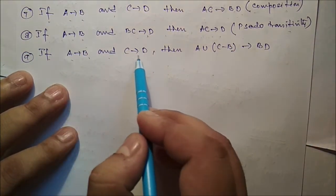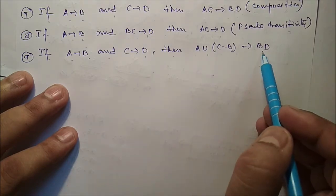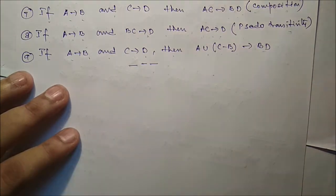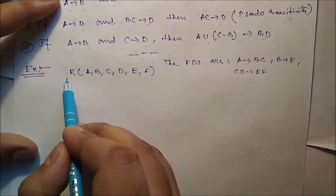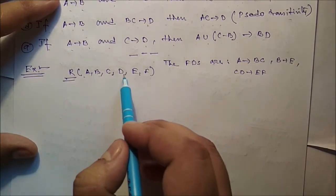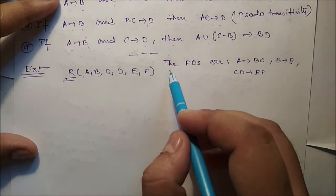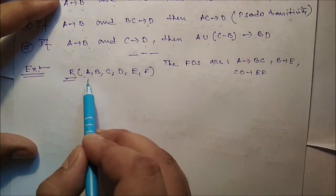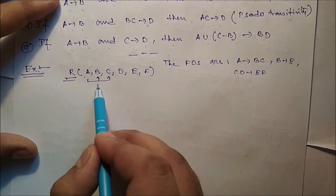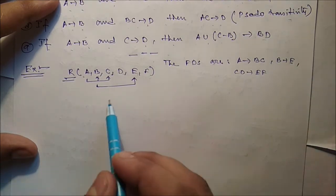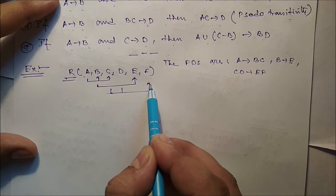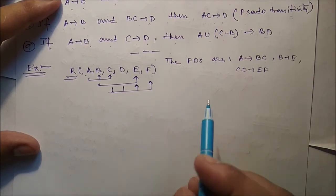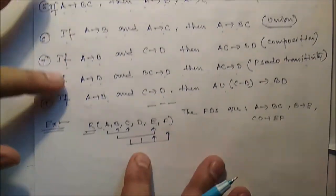Finally, if A→B and C→B then A∪C−B→B. To get the closure of the FDs we use these inference rules. For example, let table R have attributes A, B, C, D, E, F, and the given FDs are: A→BC, B→E, and CD→EF. This is our set S.